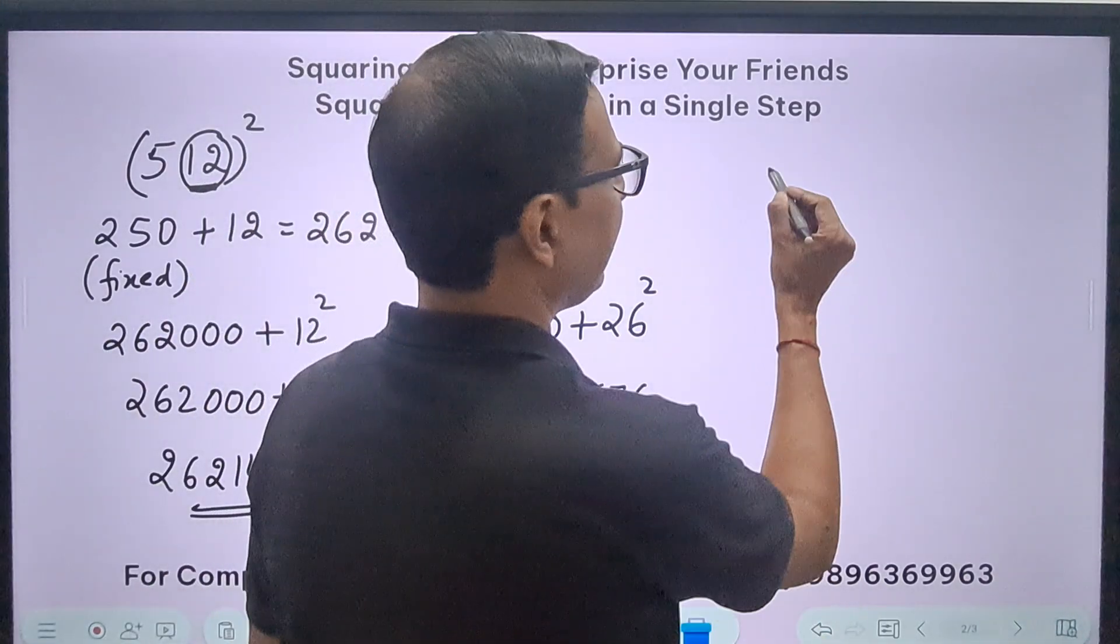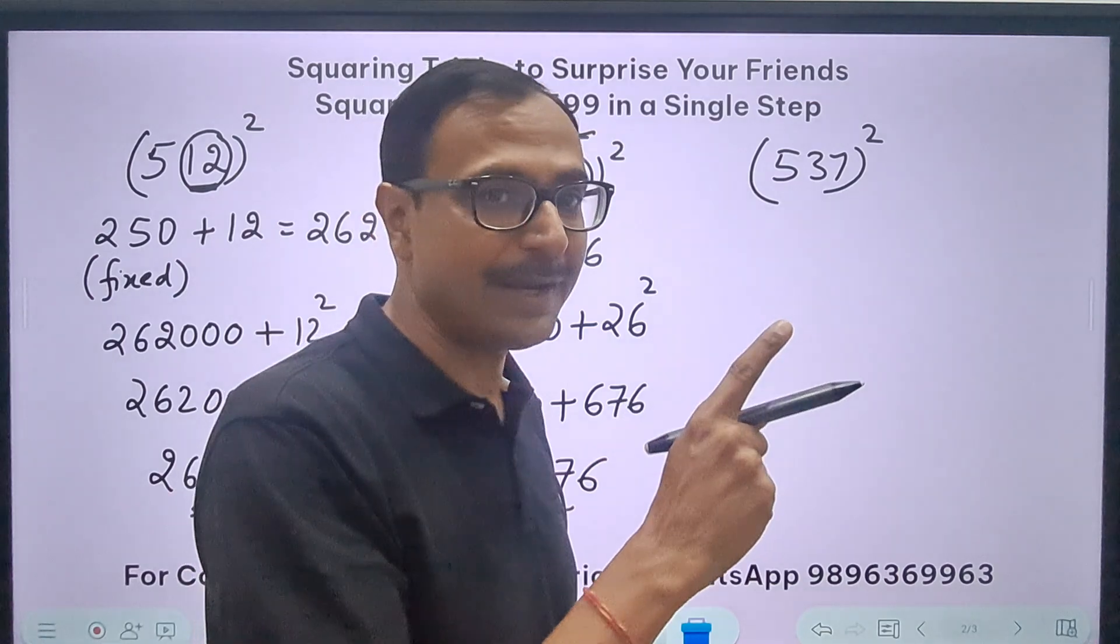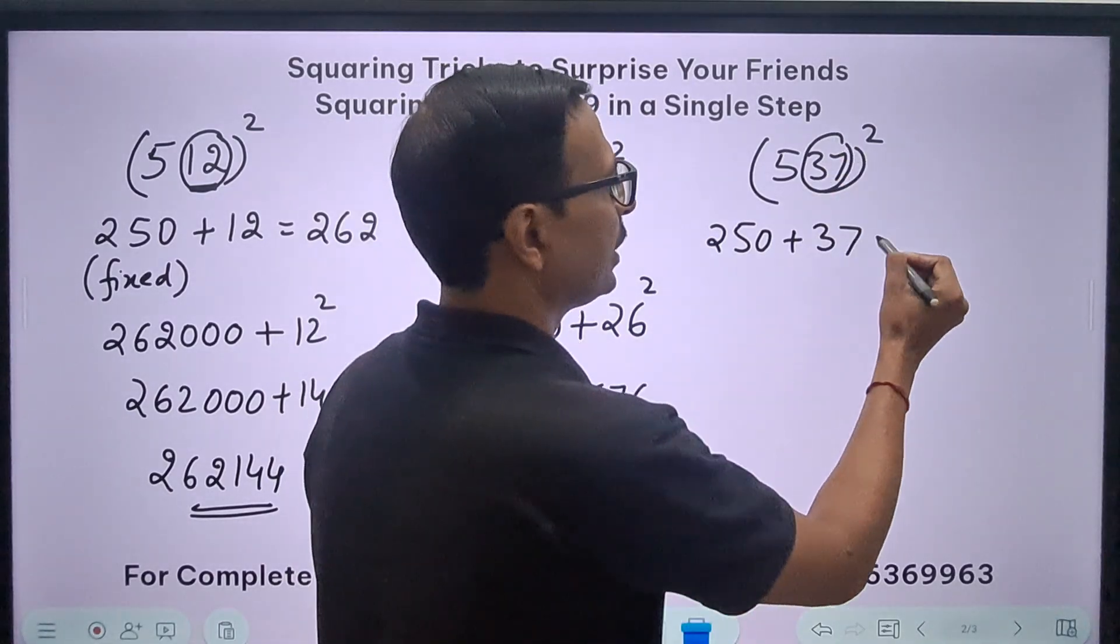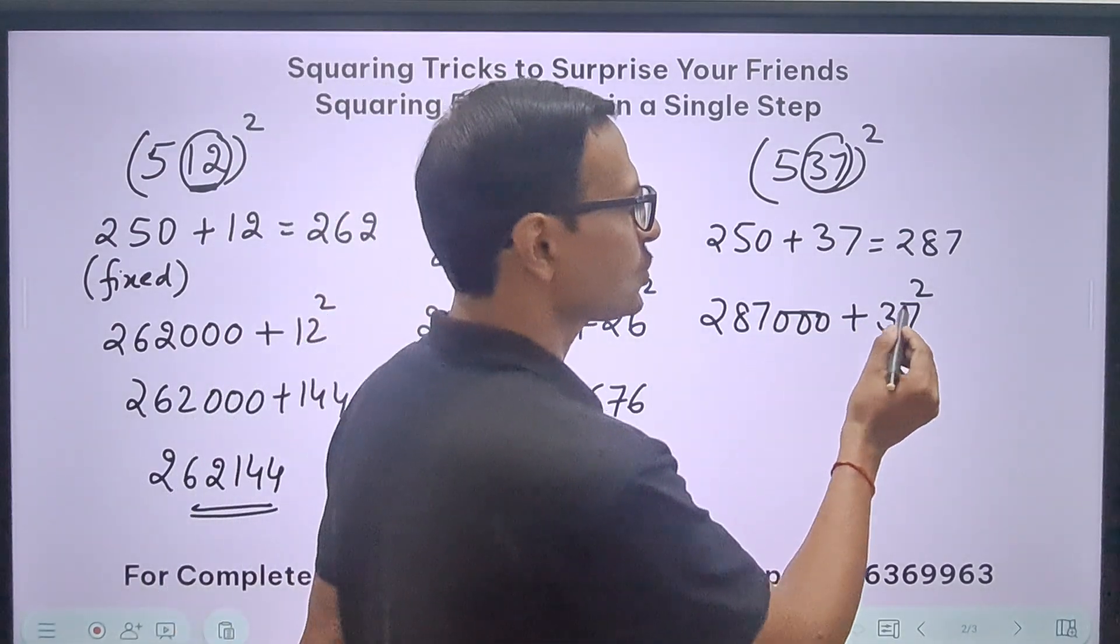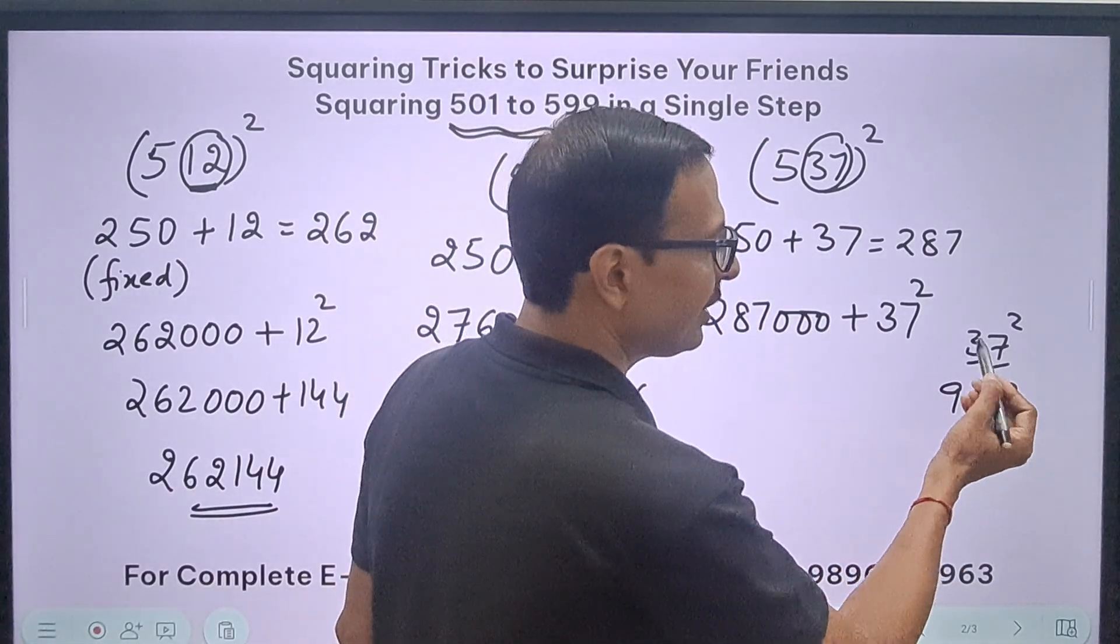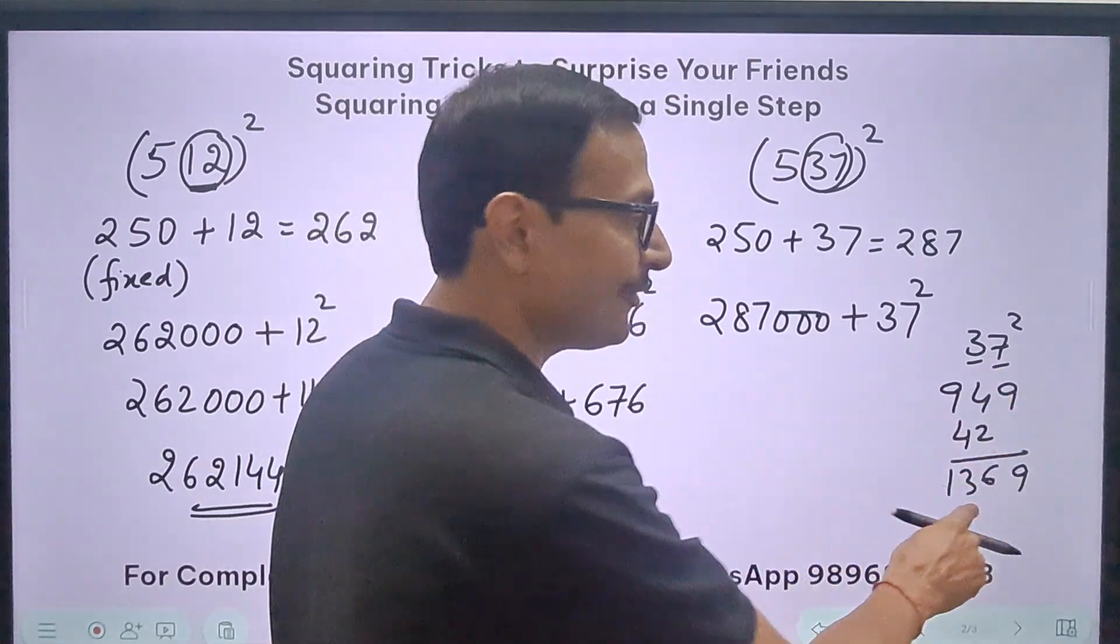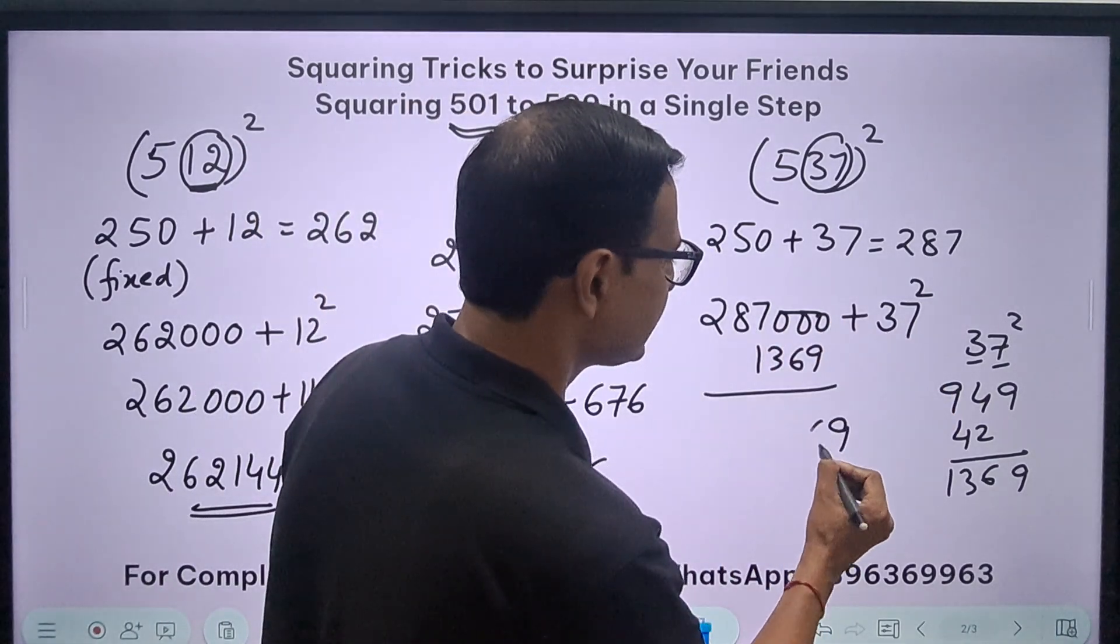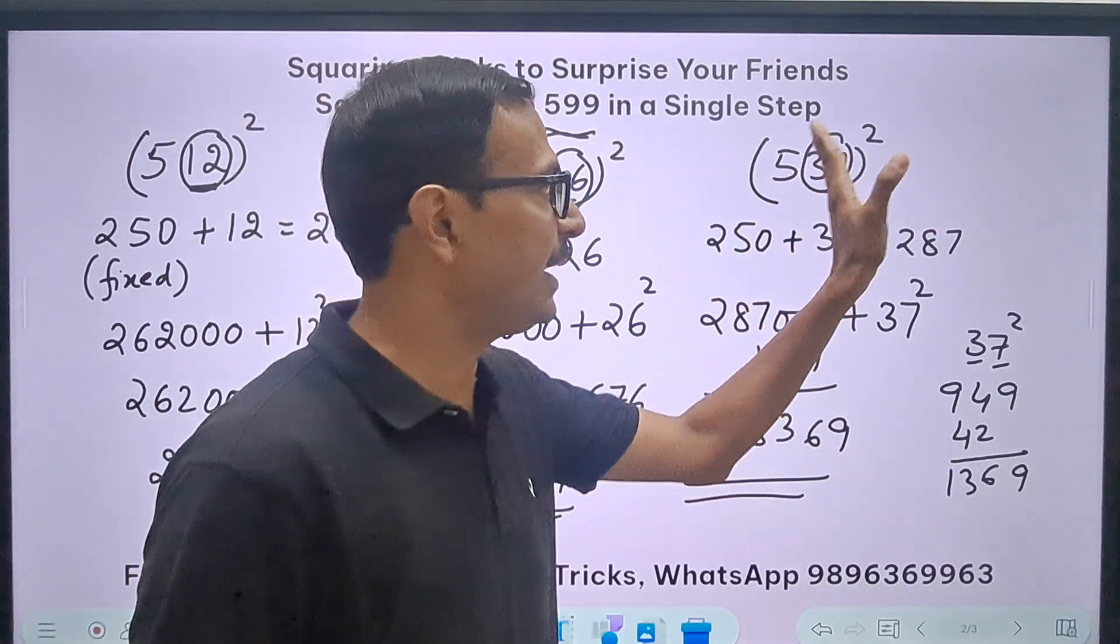Let's take more numbers. How about doing 537 square? Now I need 37 square, so I'll be using the traditional method of squaring I told you. 250 is the fixed number plus I have to add 37, this number. That gives me 287, and 287 triple 0 plus 37 square. For finding 37 square: 3 square is 9, 7 square is 49, and then 3 times 7 is 21, double is 42. I'll write 42 here and add vertically: 9, 6, 1, 3. So 1369 is the square of 37. 1369 I'll write here because I have to add it to 287 triple 0, and my answer will be 288169.